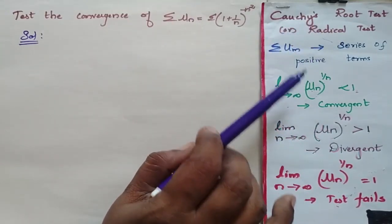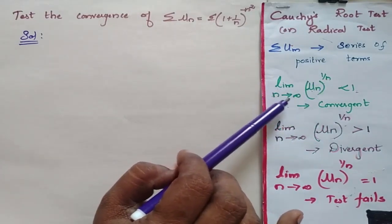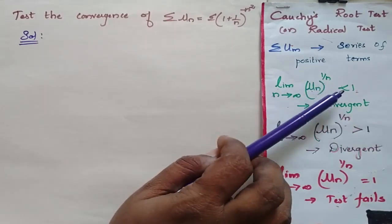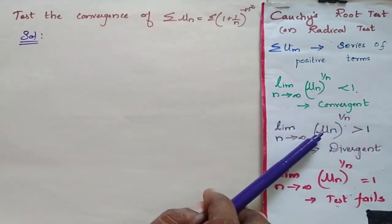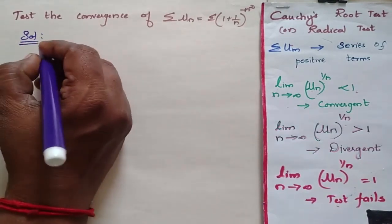Now we have to find un to the power 1 by n and then limit n tending to infinity of un to the power 1 by n. When this is less than 1 it is convergent, when it is greater than 1 it is divergent, and when it is equal to 1 the test fails.